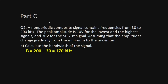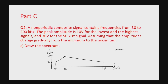For Part B, calculate the bandwidth of the signal. Bandwidth equals highest minus lowest: 200 minus 30 equals 170 kilohertz. Make sure you use the same unit of measurement. For Part C, draw the frequency spectrum. The x-axis must be frequency in kilohertz and the y-axis must be amplitude.